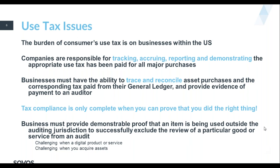What joint and several liability means is that if the seller doesn't do it right, that doesn't mean the obligation goes away. Or if the seller has no obligation to do it at all, that obligation doesn't go away. The obligation just switches to the consumer to make a self-assessment of use tax based on the law. The seller doesn't get it right, the obligation falls on you as the purchaser. And as businesses, that liability is real and it's serious.